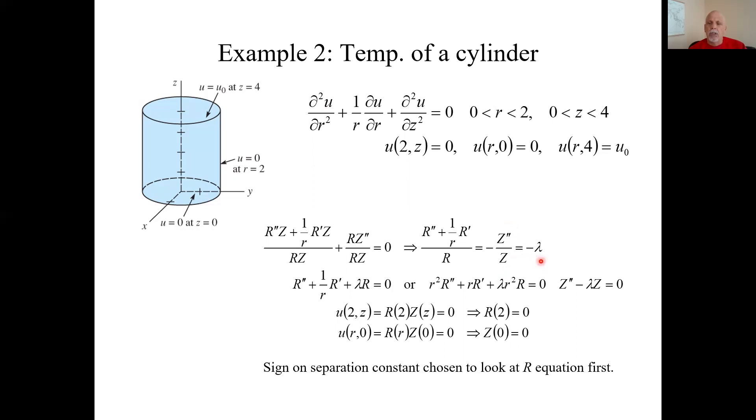I could set it equal to either minus lambda or plus lambda. And here's kind of a subtlety. Sometimes you got to kind of look ahead. Let's go ahead and do those two equations. So if I do set it to negative lambda, I'll get this for the R equation. I could multiply through by r squared and I'll get this. And if you recognize this, when lambda is either positive or negative, it will be either a Bessel equation or a modified Bessel equation. So the R equation is some kind of Bessel equation.